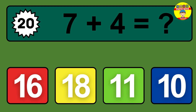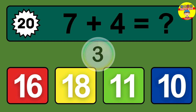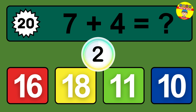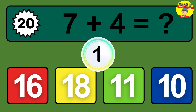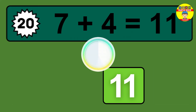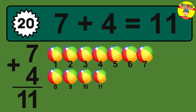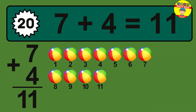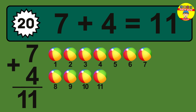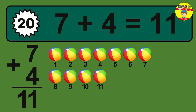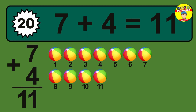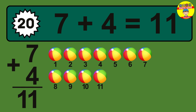Question 20. 7 plus 4 equals what? The answer is 7 plus 4 is 11. Let's count it: 1, 2, 3, 4, 5, 6, 7, 8, 9, 10, 11.